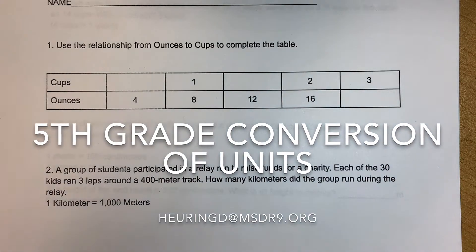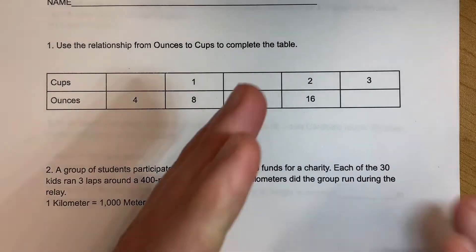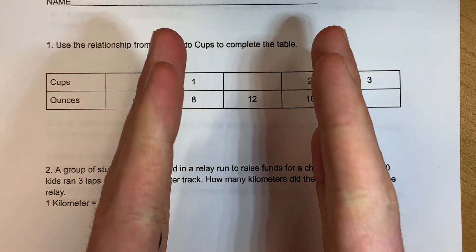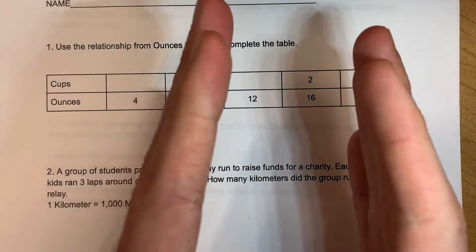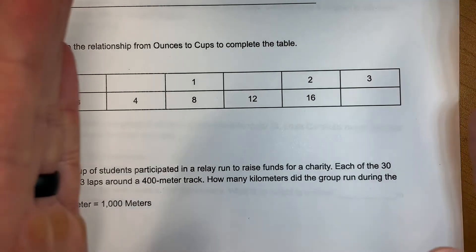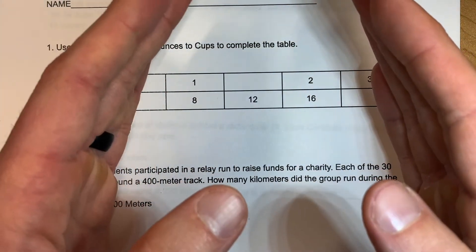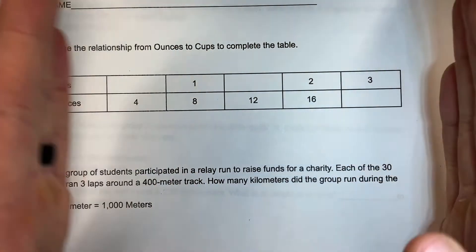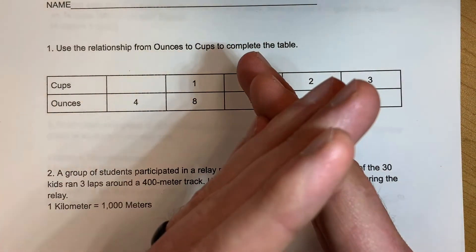We're converting units and measurements. They all know the hand signs — going from small to big, you divide, hands go straight out. Going from large to small, you multiply. So small to big, arms straight across, divide; big to small, you put your arms together as a multiply sign.